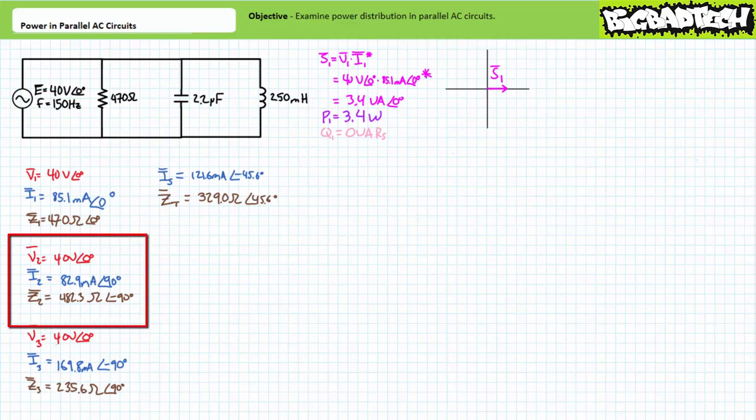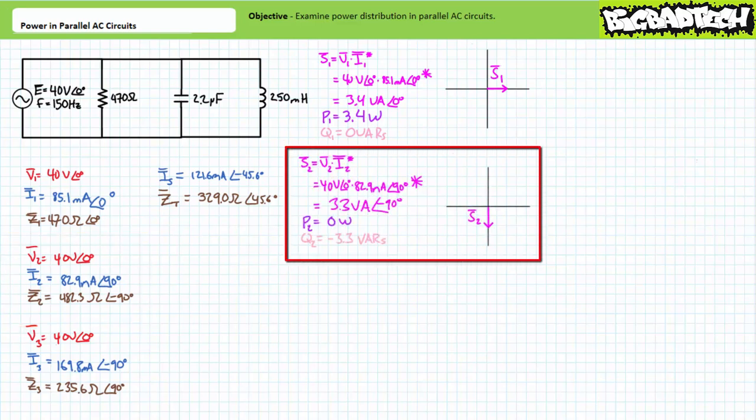Let's now examine the capacitive impedance Z2. Current through the capacitor leads the voltage across it by a relative 90 degrees. For this purely capacitive element, we should anticipate all of apparent power to be directed towards a reactive interchange. Apparent power is the complex conjugate of voltage times current. Substituting in our given values, we arrive at an apparent power figure of 3.3 volt amperes at an angle of negative 90 degrees. Resolving this demonstrates this capacitor is directing zero watts towards real power and negative 3.3 vars towards a reactive interchange.